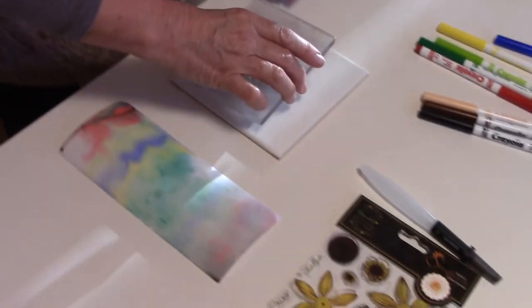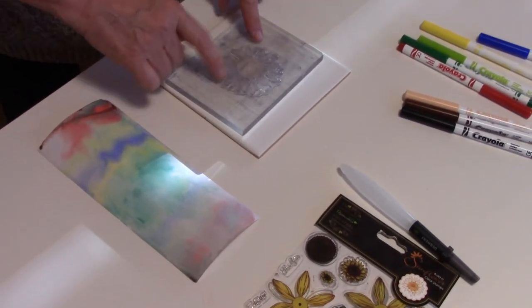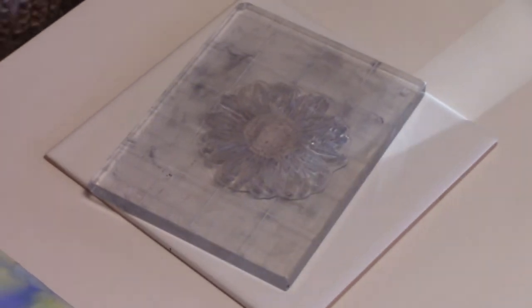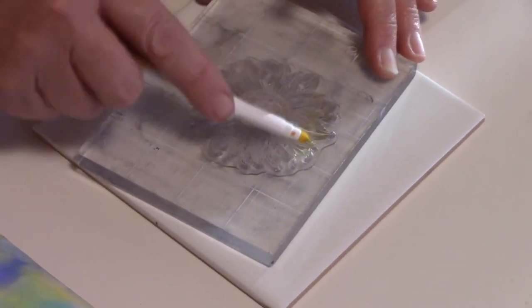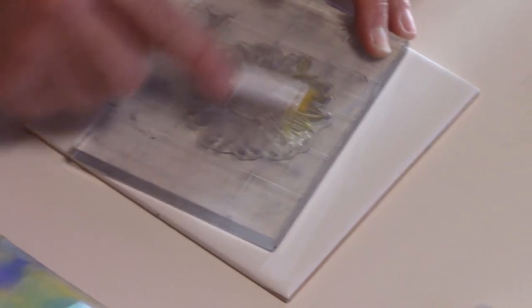Another thing they're good for is if you want to stamp an image. So I'm just taking this sunflower here, I love this stamp, I use it a lot. And okay, we'll take the yellow marker and actually I'll just make it multicolored for the fun of it.